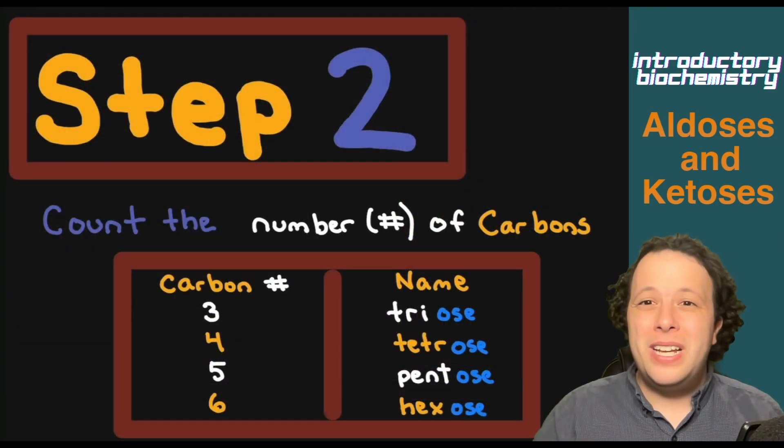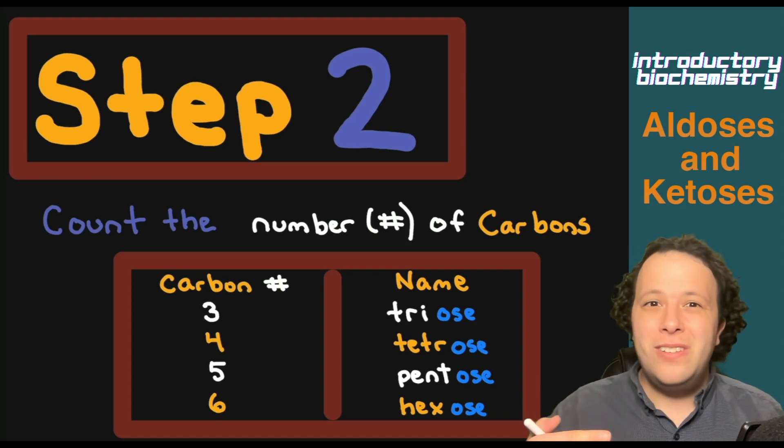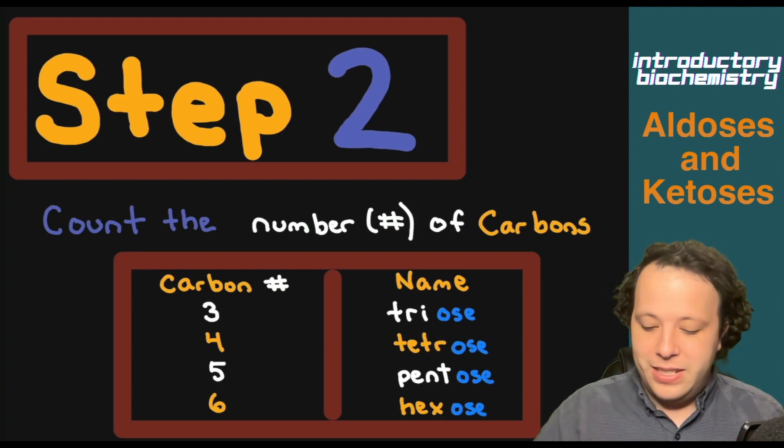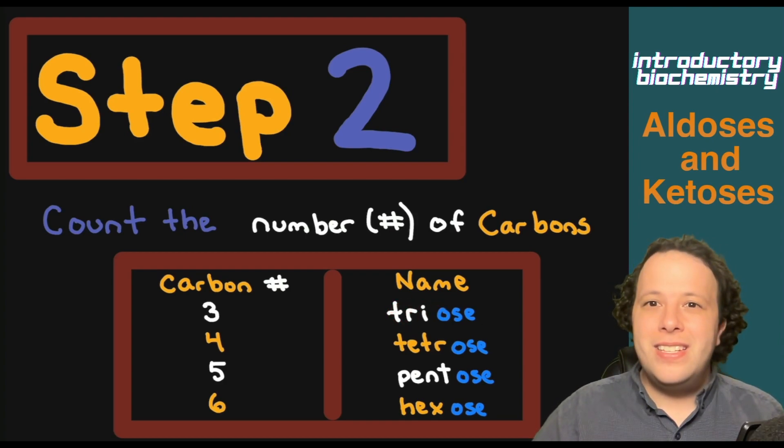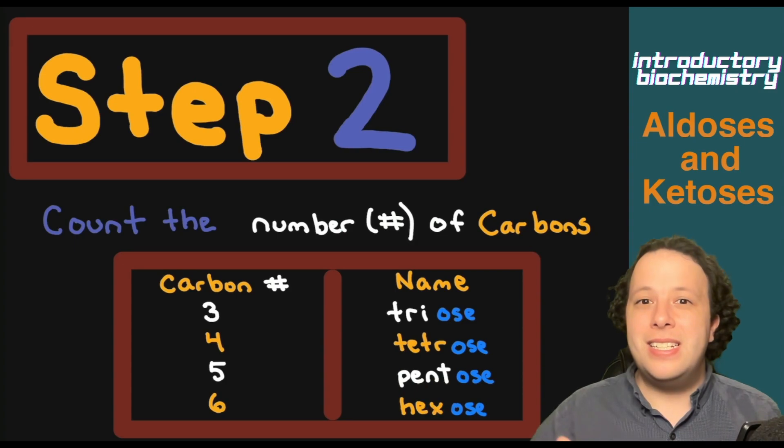Step two, now that we identified what functional group we have, we're now going to count the number of carbons. So there are generally most of these simple carbohydrates go up to typically seven carbons most of the time. So if we have three carbons, this is going to be a triose. Think of a triangle, so triose. When we have four, this is a tetrose, five is pentose, six is hexose.